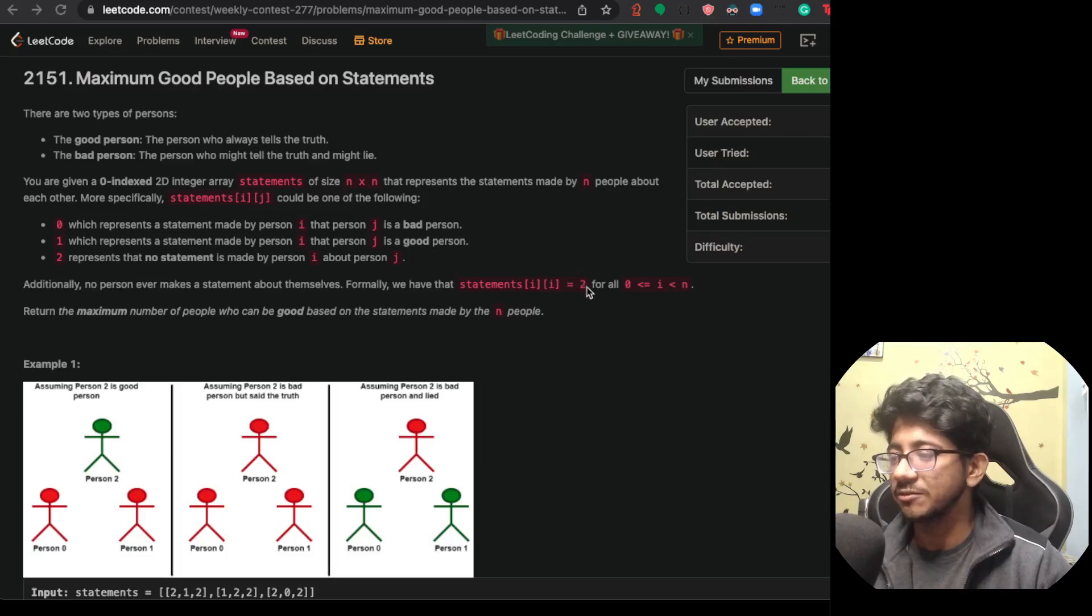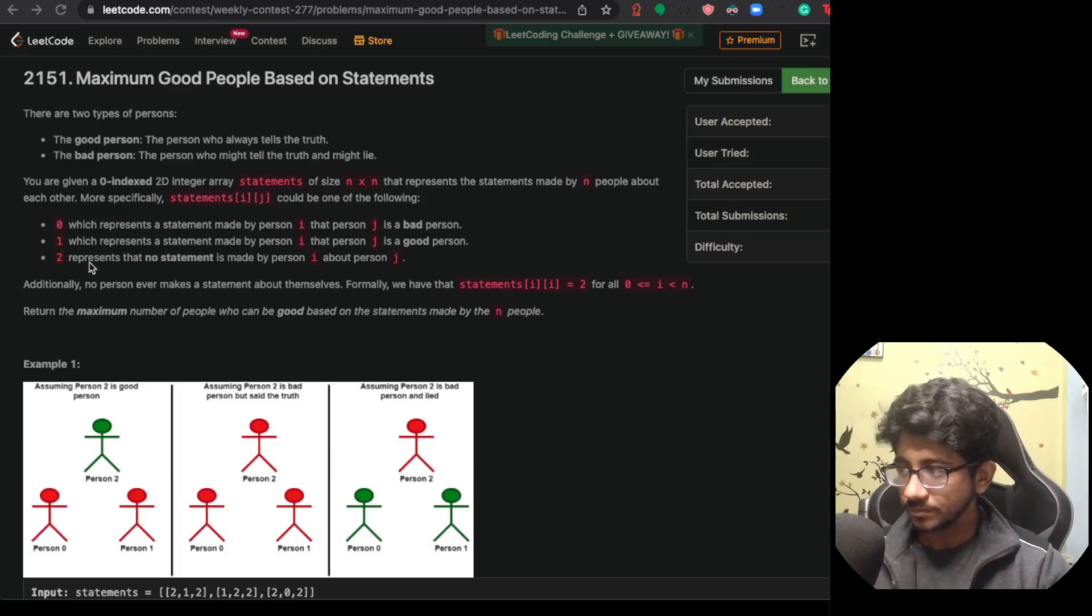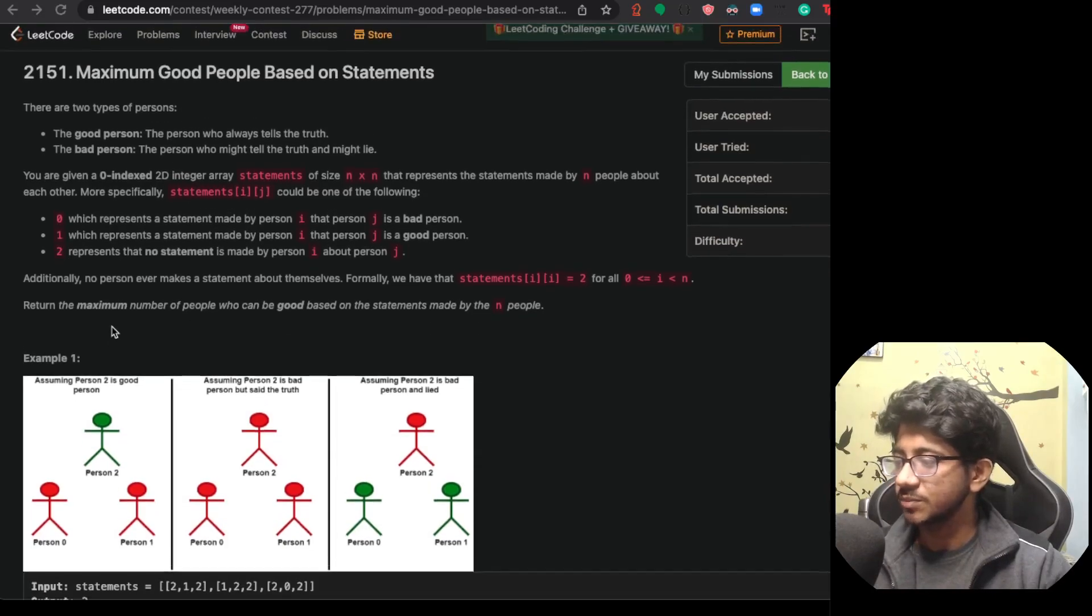You're given a zero-indexed 2D array statements N cross N. Zero means that I says J is bad. One means that I says J is good. And two means no information. So every I to I is two because nobody can tell anything about themselves. They could have given some value, it doesn't really matter.